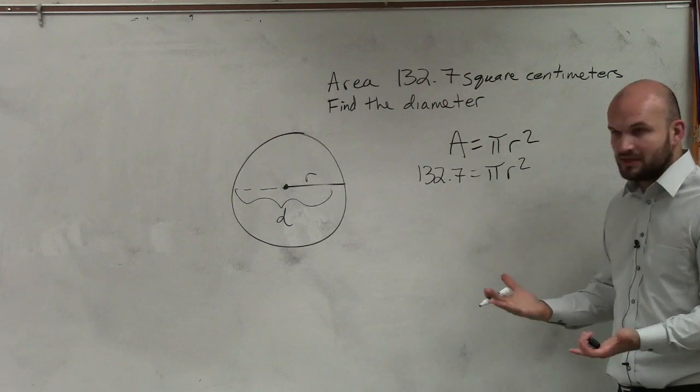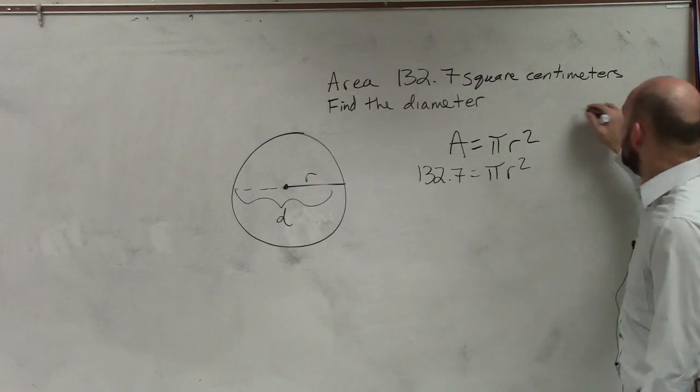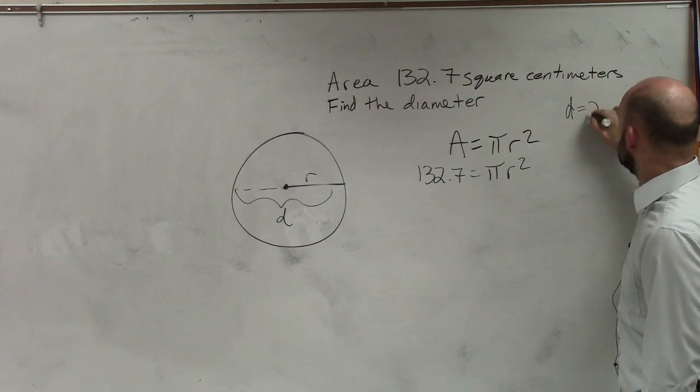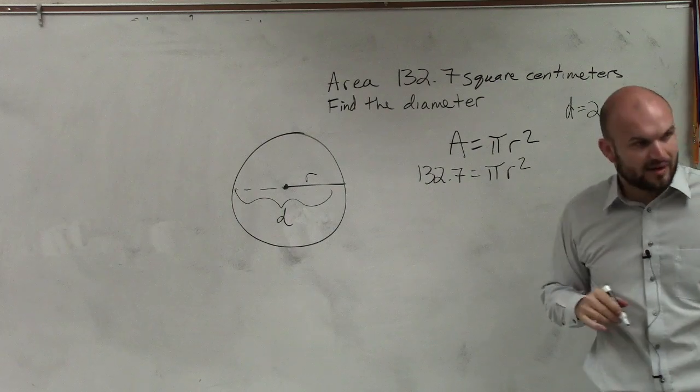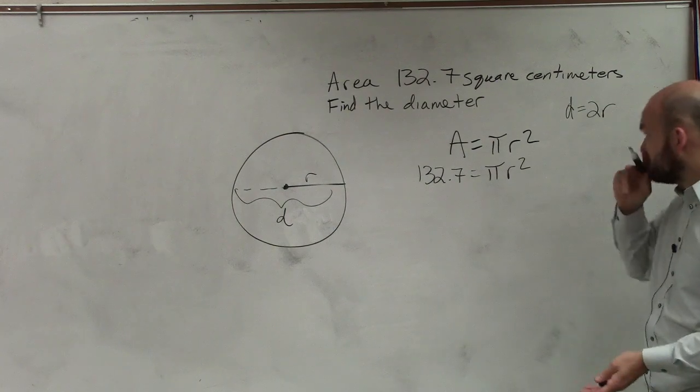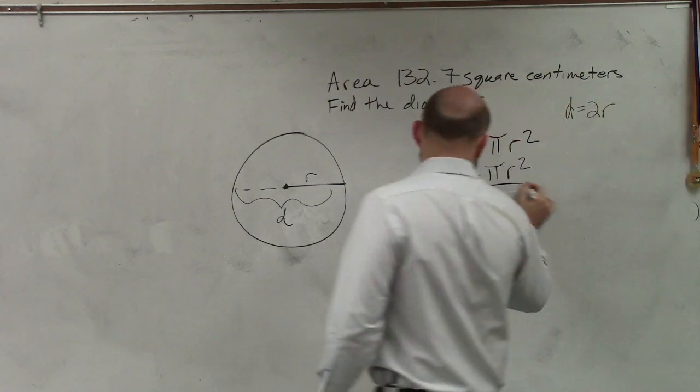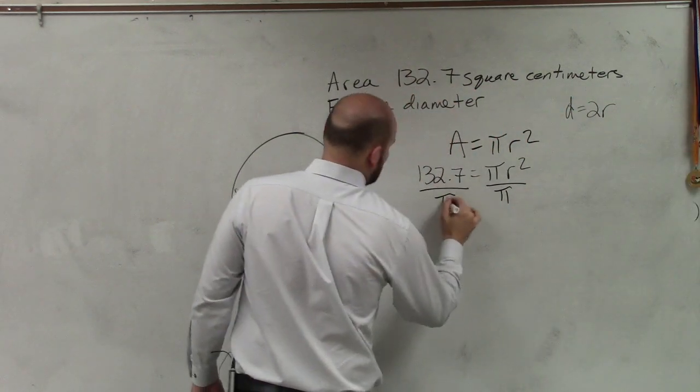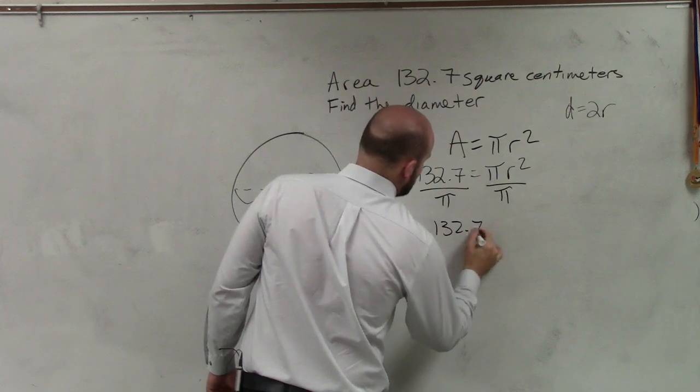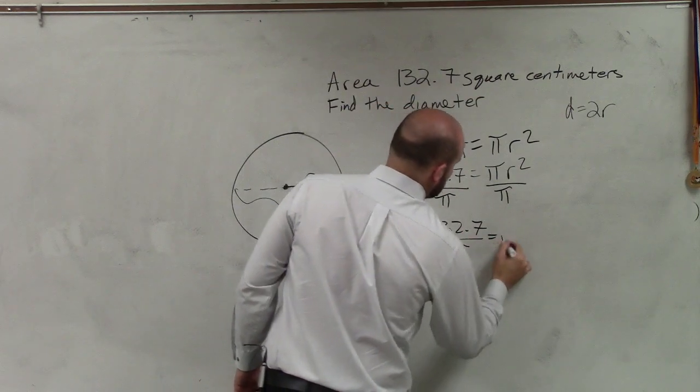What is the relationship between the radius and the diameter? Remember that the diameter equals 2 times the radius. So I need to first figure out r, then multiply by 2 to find the diameter. To do that, I need to divide by pi. So I have 132.7 divided by pi equals r squared.